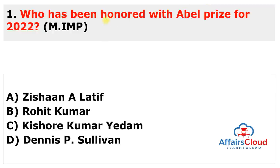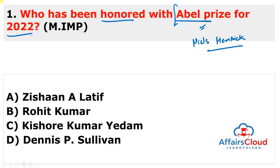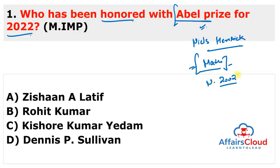First question: Who has been honored with the Abel Prize for 2022? The prize is named after Norway's greatest mathematician, Niels Henrik Abel. It is the highest honor given in the field of mathematics, similar to the Nobel Prize for sciences. It is awarded for major contributions in the field of math and was established by the Norwegian Parliament in the year 2002, on the occasion of the 200th anniversary of Niels Henrik Abel's birth.